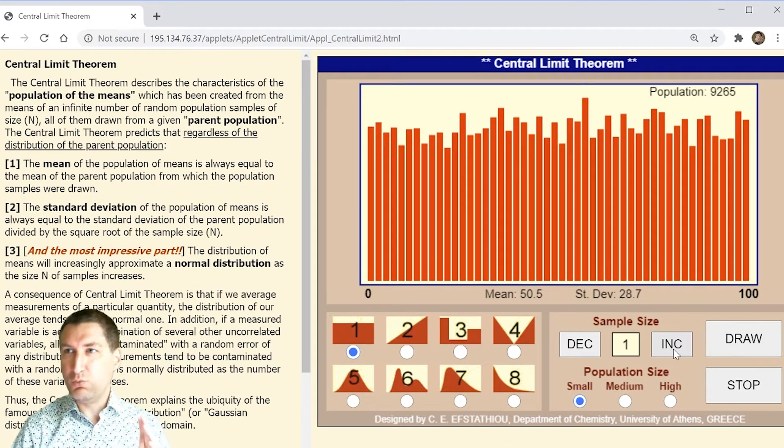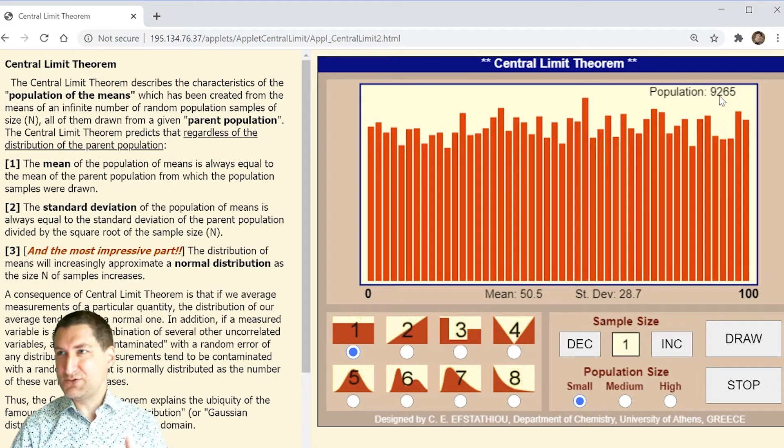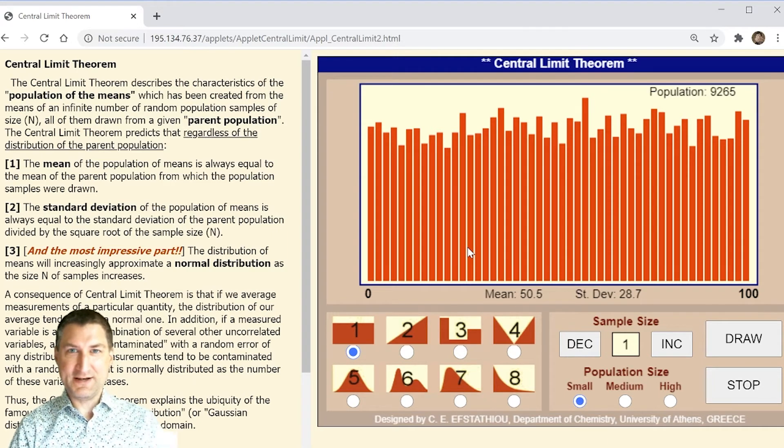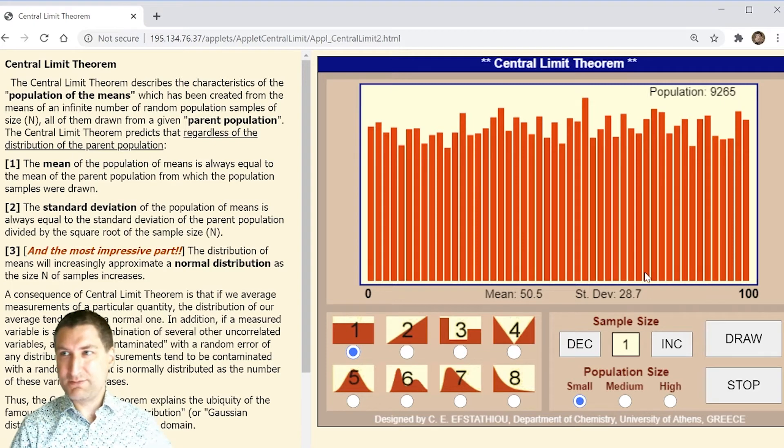Here we have a uniform distribution. We're saying give me 10,000 samples of uniform distribution, show me the distribution. Well, it looks basically uniform. This is kind of what these laws of large numbers tell us is that in the limit, if I take a whole bunch of samples, the sample PDF should look like the underlying PDF.